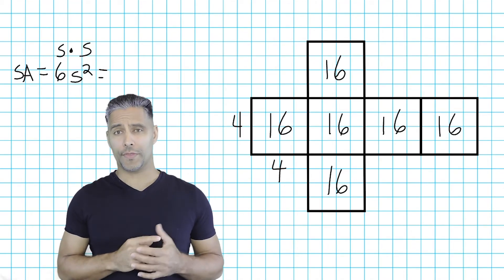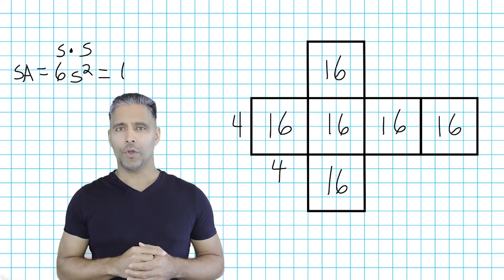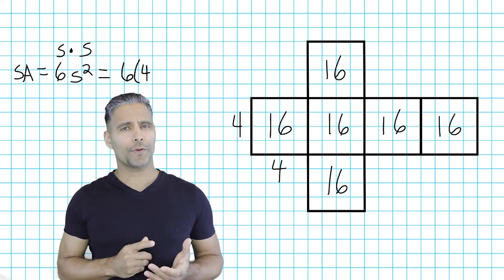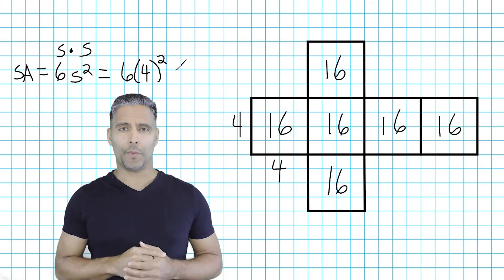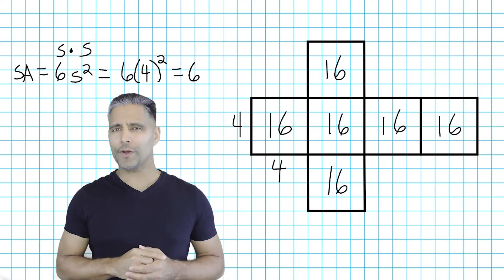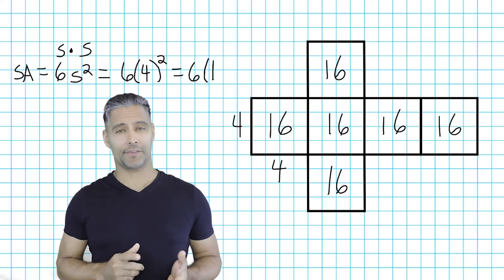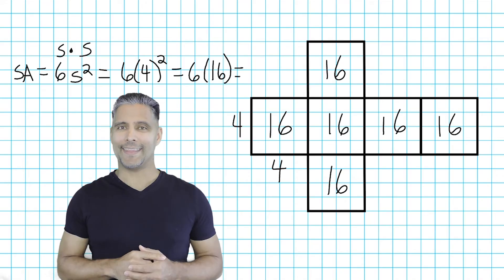To solve for this cube, substitute 4 in for s, which is the side length, and raise 4 to the second power. Remember, the order of operations states that we must perform exponents before multiplication. So, after raising 4 to the second power and getting 16, we just multiply that by 6, and that gives us a product of 96.